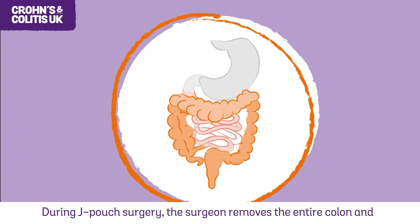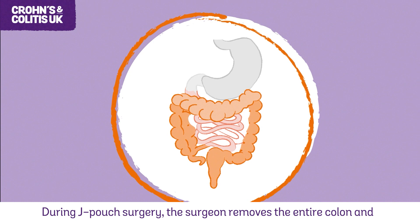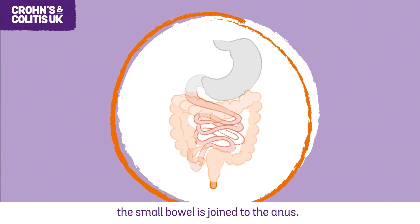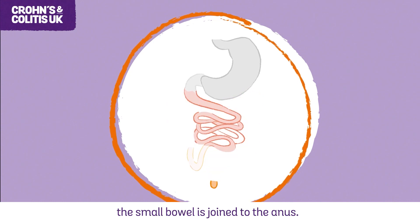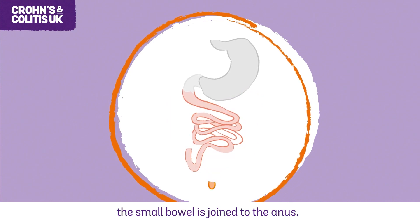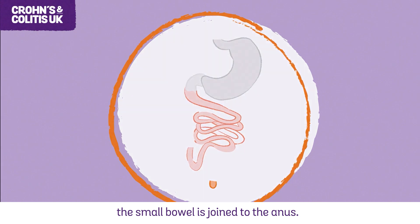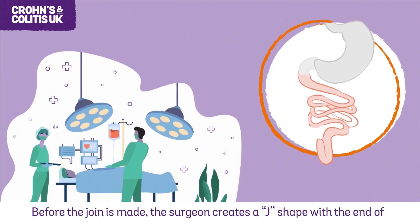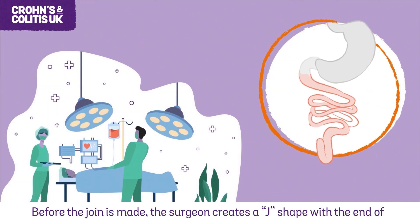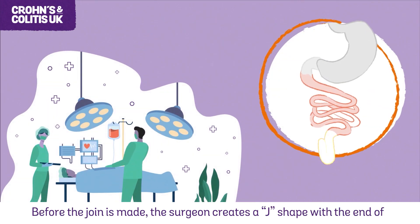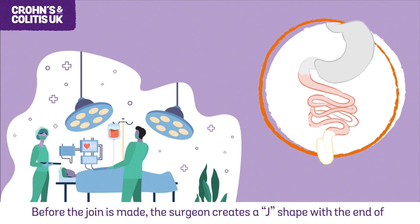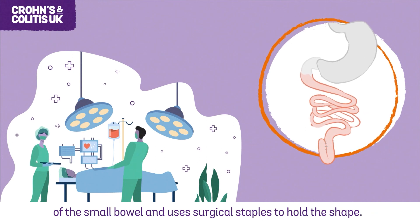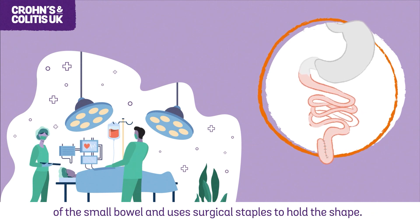During J-pouch surgery, the surgeon removes the entire colon and rectum, and the small bowel is joined to the anus. Before the join is made, the surgeon creates a J shape with the end of the small bowel and uses surgical staples to hold the shape.